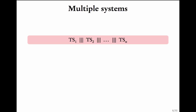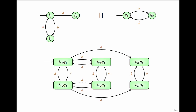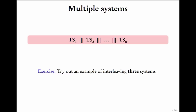With similar arguments, you can complete this picture, which gives the interleaved transition system. The interleaving operator works for multiple transition systems as well. If you have TS1, TS2 through TSN, you can interleave each of them. The states would be a Cartesian product of each of these transition systems, and the transitions are given in the same way as discussed. As an exercise, try out an example of interleaving three transition systems.